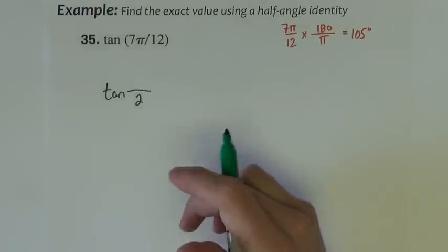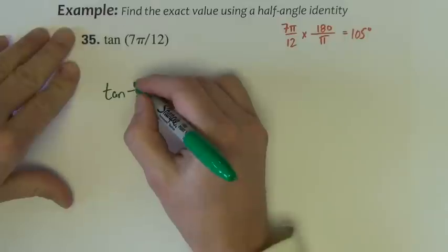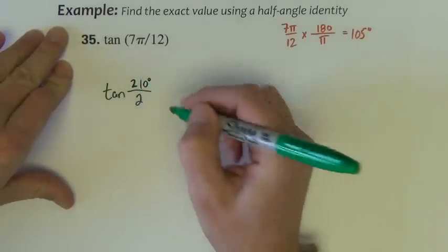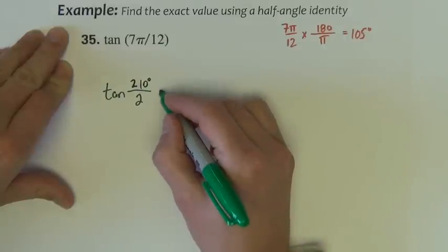So what number divided by 2 gives 105 degrees? And that would be 210 degrees.